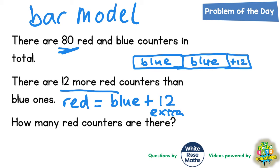So we could plus 12 on the end. This section for blue here is representing the red counters but with the extra 12 on the end. But don't forget that the amount of counters altogether is 80. So this entire distance here would be 80 counters.